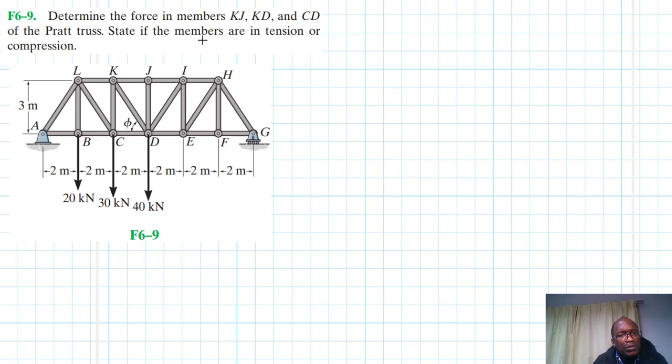The problem reads: determine the force in members KJ, KD, and CD of the Pratt truss. State if the members are in tension or compression. This problem is coming from the Engineering Mechanics Statics textbook 13th edition by R.C. Hibbeler.